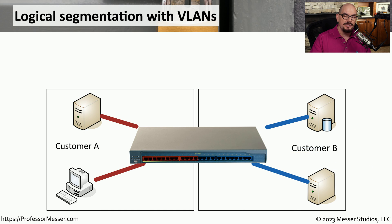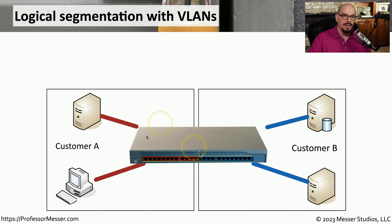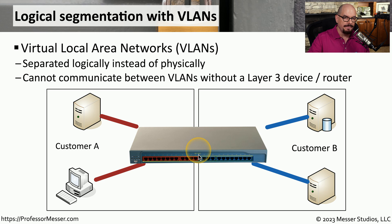You can perform the same segmentation on the same device by using virtual LANs or VLANs. VLANs allow you to logically assign interfaces on the switch to one particular network or another. Once those are assigned, only devices on the same VLAN can communicate with each other. So only customer B would be able to communicate through the blue interfaces, and customer A through the red interfaces. On this single switch, you would not be able to communicate from the red VLAN to the blue VLAN. Although these devices are all on the same physical device, we have logically segmented them, and the only way to communicate between customer A and customer B is with a router that connects to both of those VLANs.